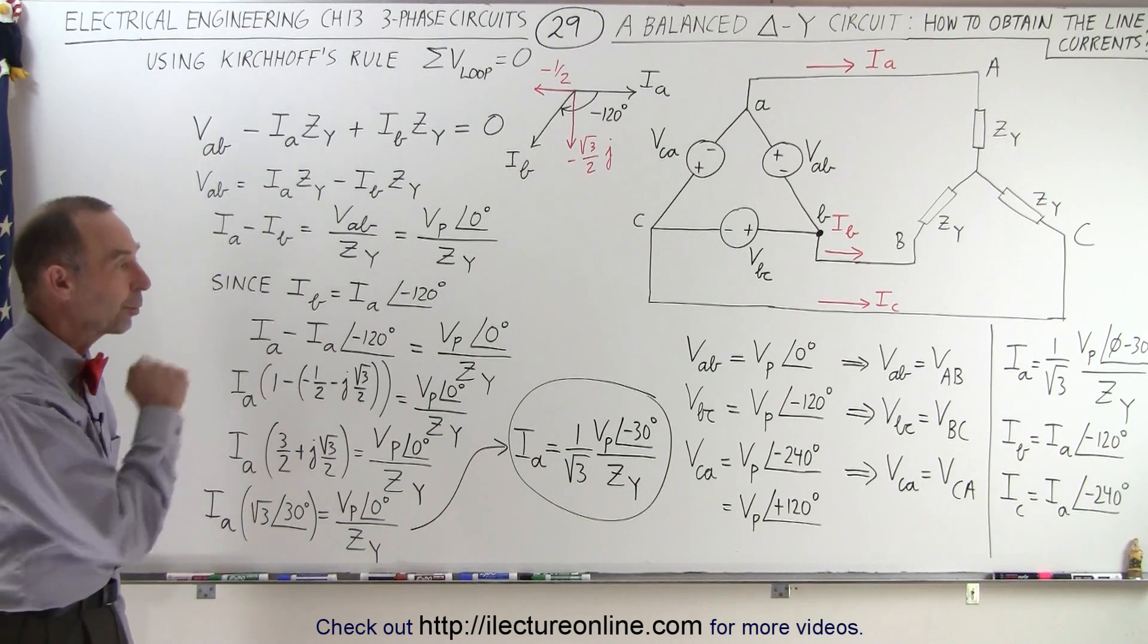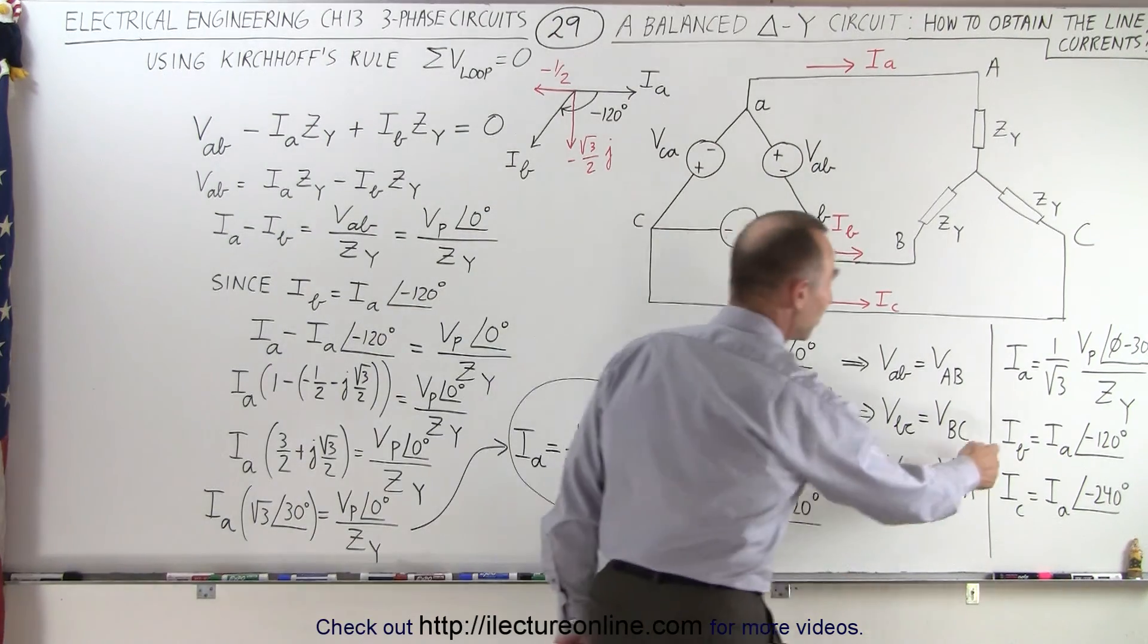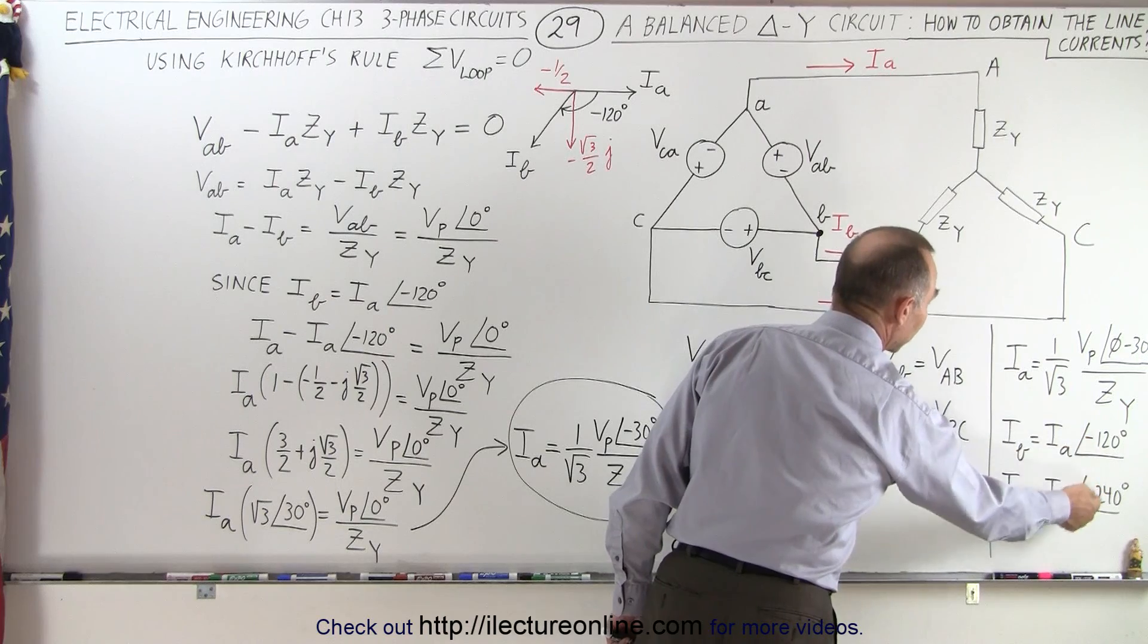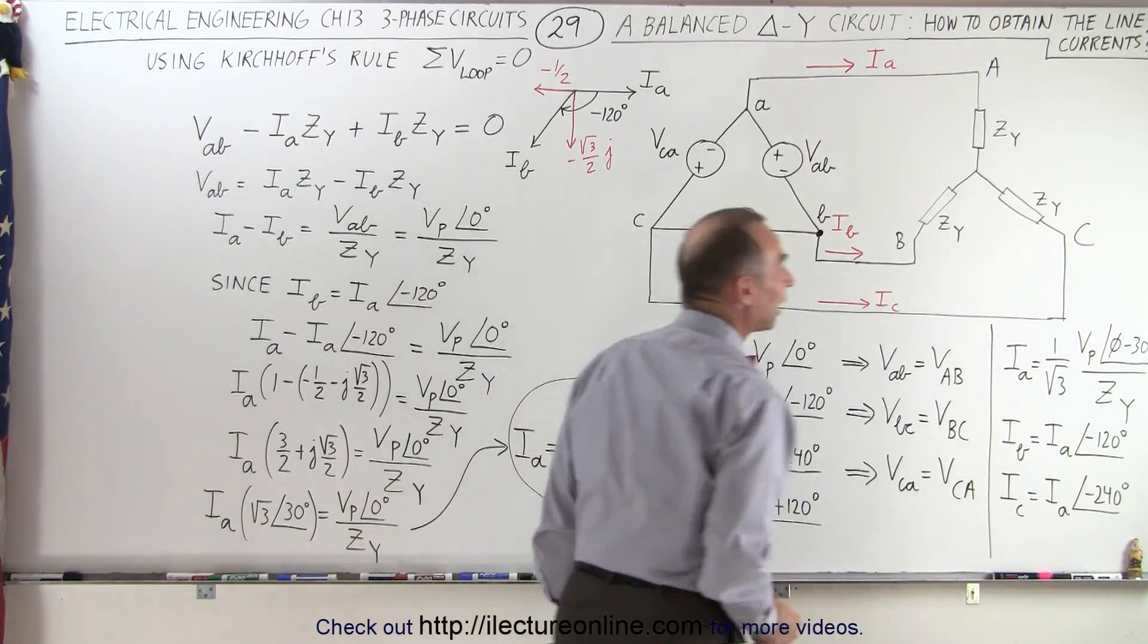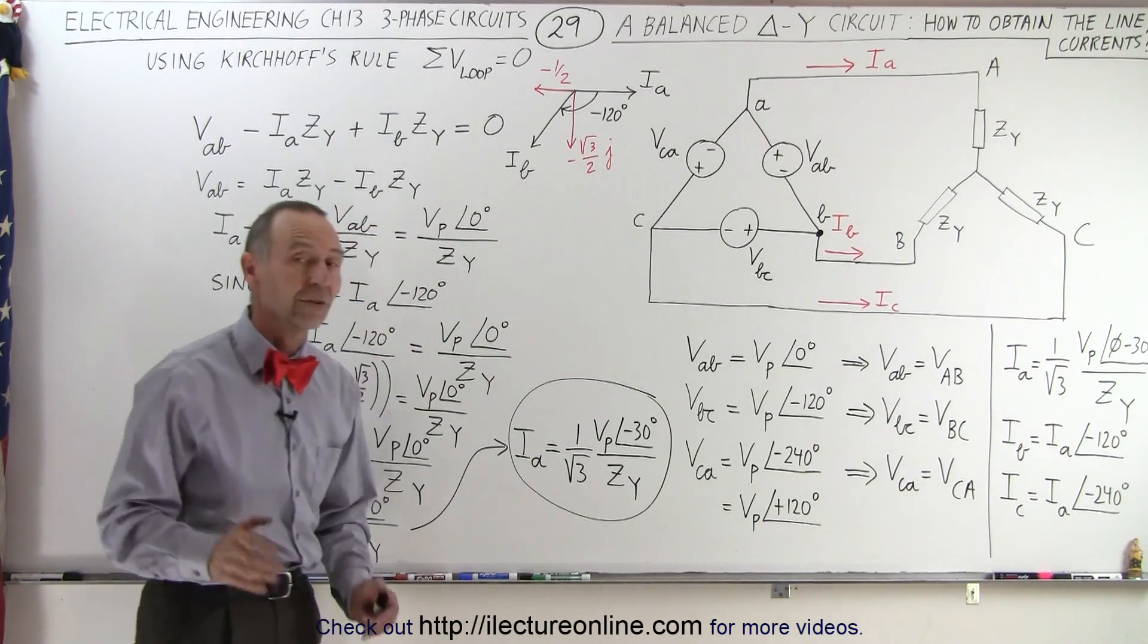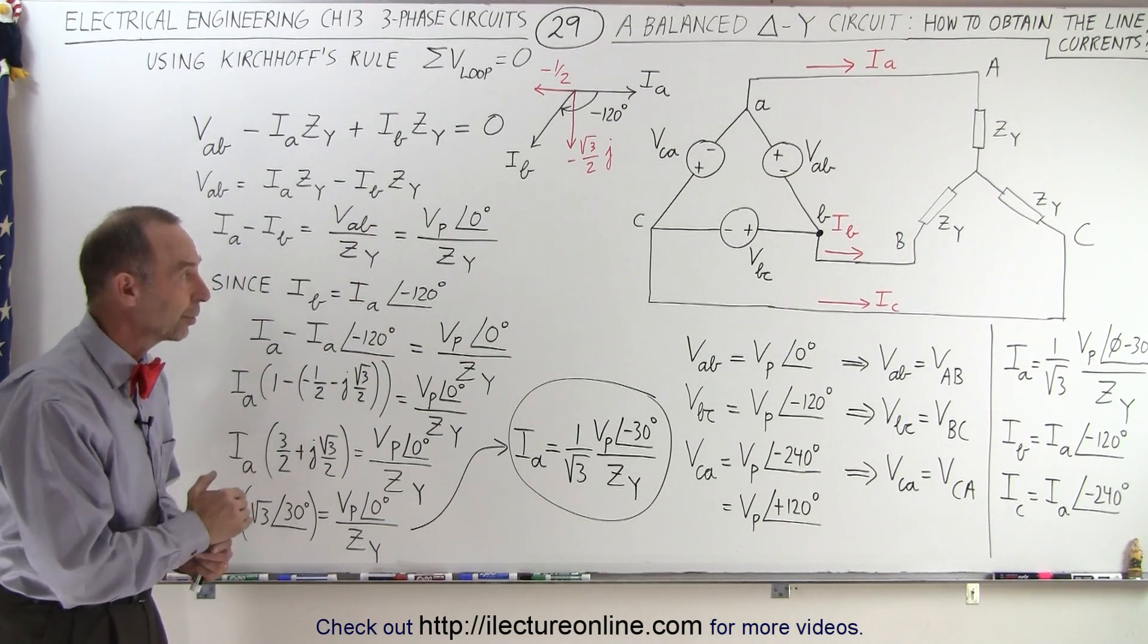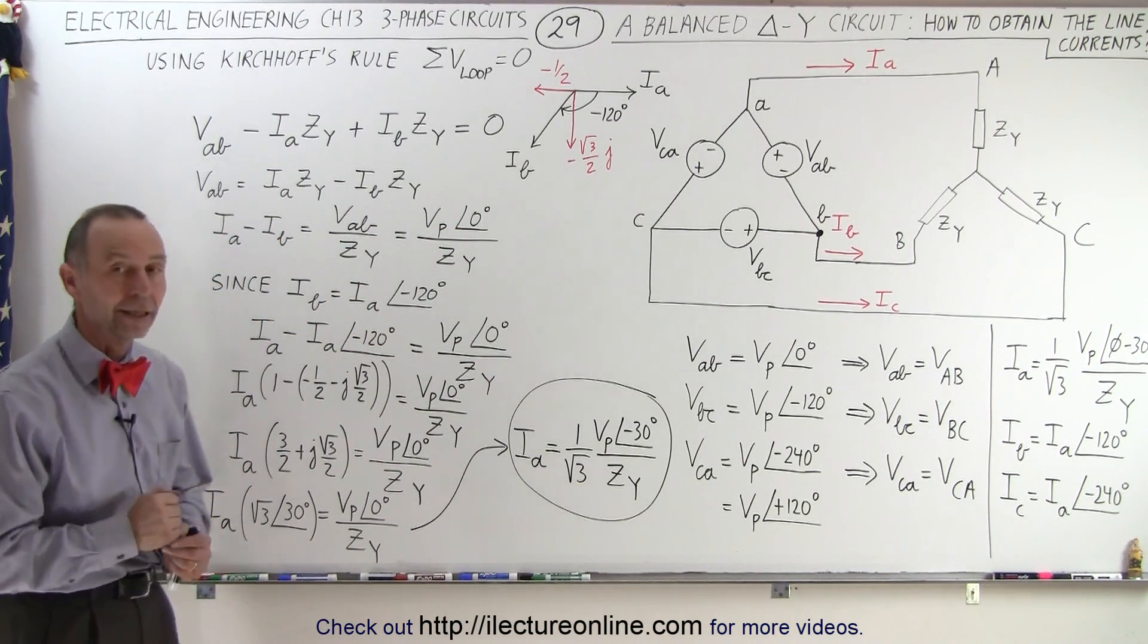And that's where that equation came from. Then of course, to find I sub B and I sub C, we simply subtract 120 degrees once or twice in relation to I sub A. And so that's how we find the three line currents, IA, IB, and IC.